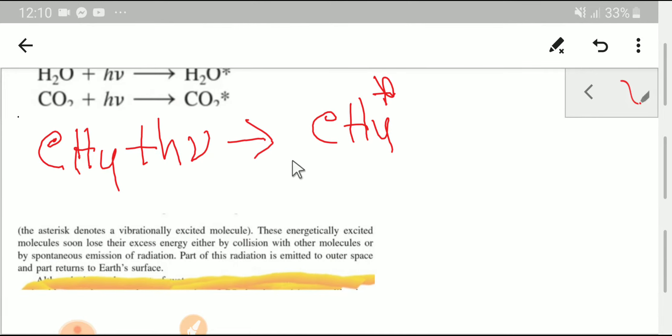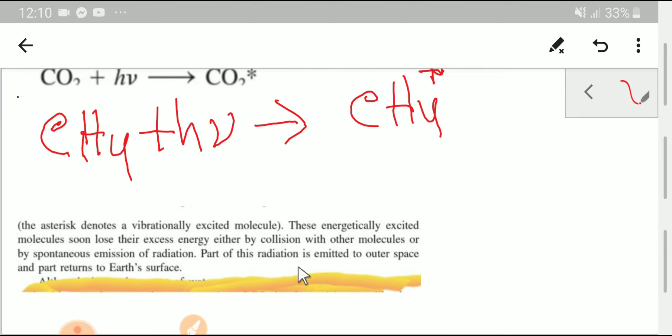However, look at these things. These energetically excited molecules soon lose their excess energy either by collision with other molecules or by spontaneous emission of radiation. Part of this radiation is emitted to outer space and part returns to the Earth's surface.